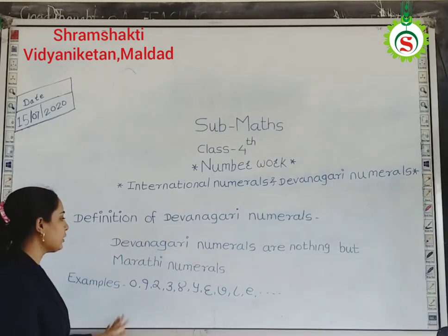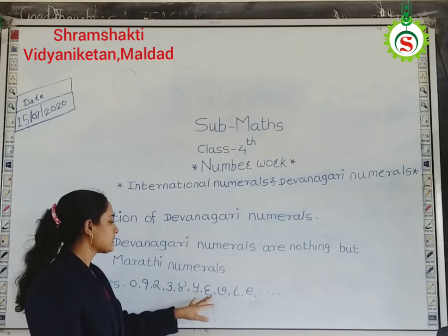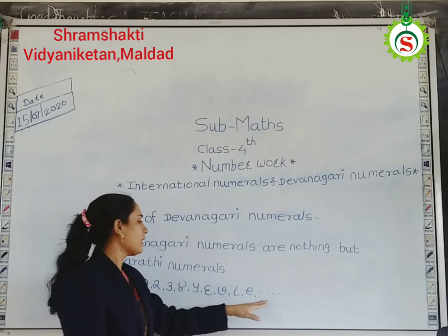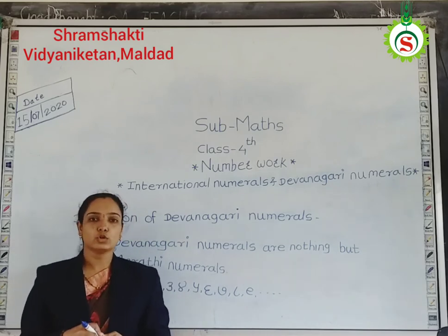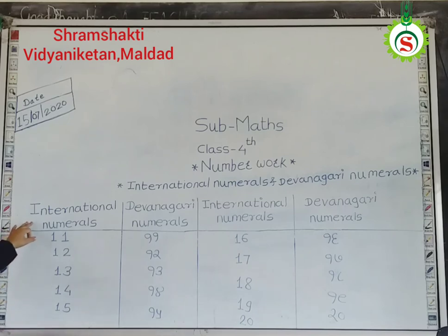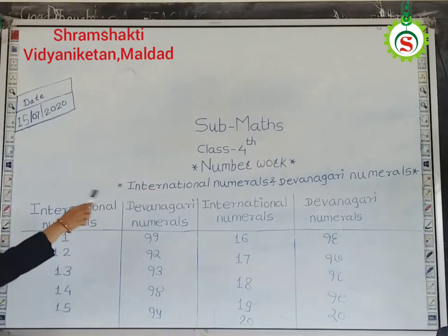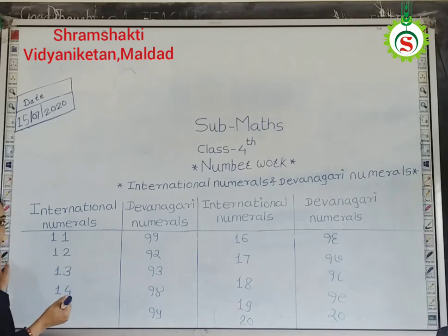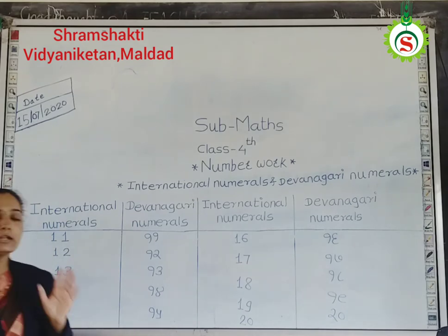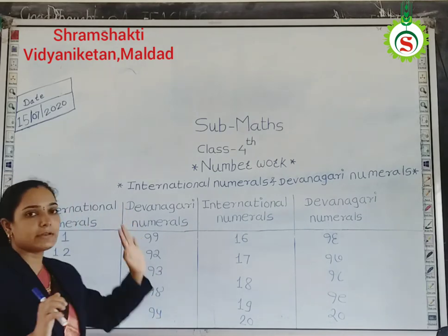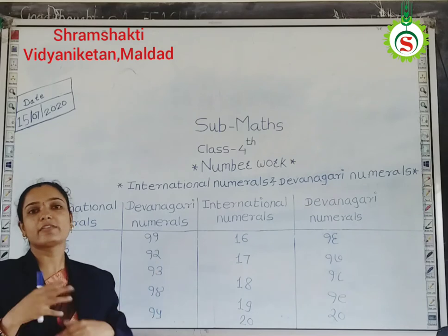Examples of Devanagari numerals are Shunya, 1, 2, 3, 4, 5, 7, 9, etc. Now we have to see some examples of international numerals and Devanagari numerals. Here some international numerals and some Devanagari numerals are given. Observe carefully. International numerals means English numerals and Devanagari numerals means Marathi numerals. The value of international numerals and Devanagari numerals are always the same, but reading and writing of that number is different, or in a different language.